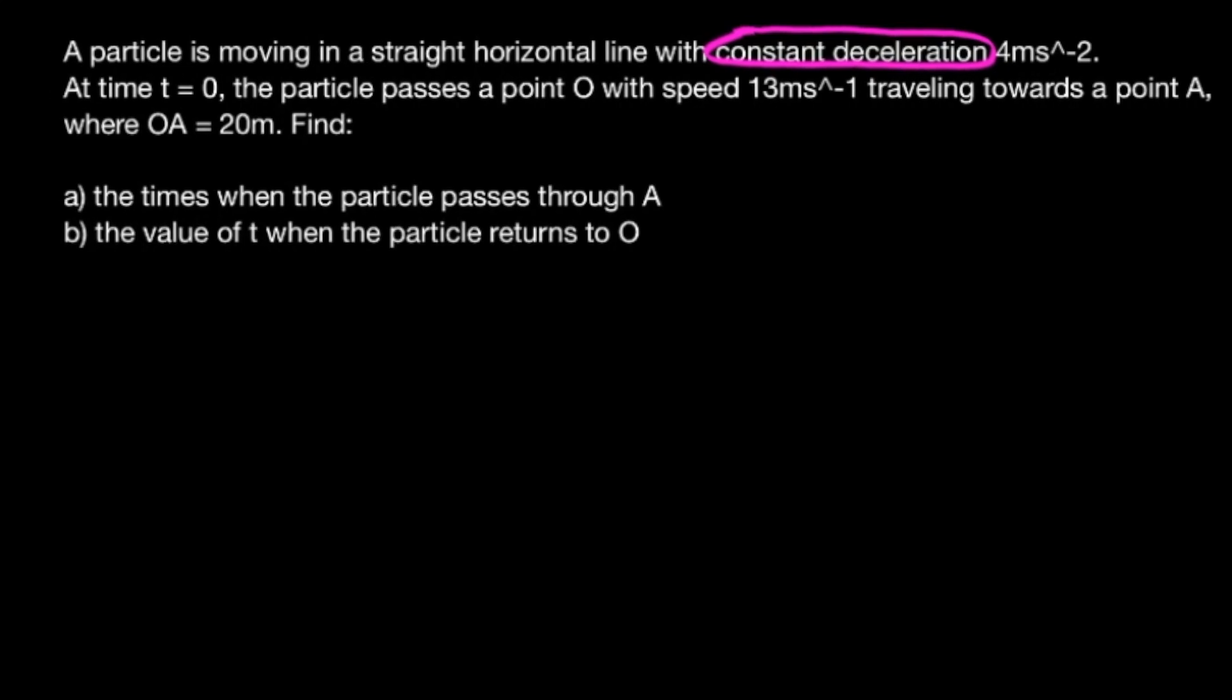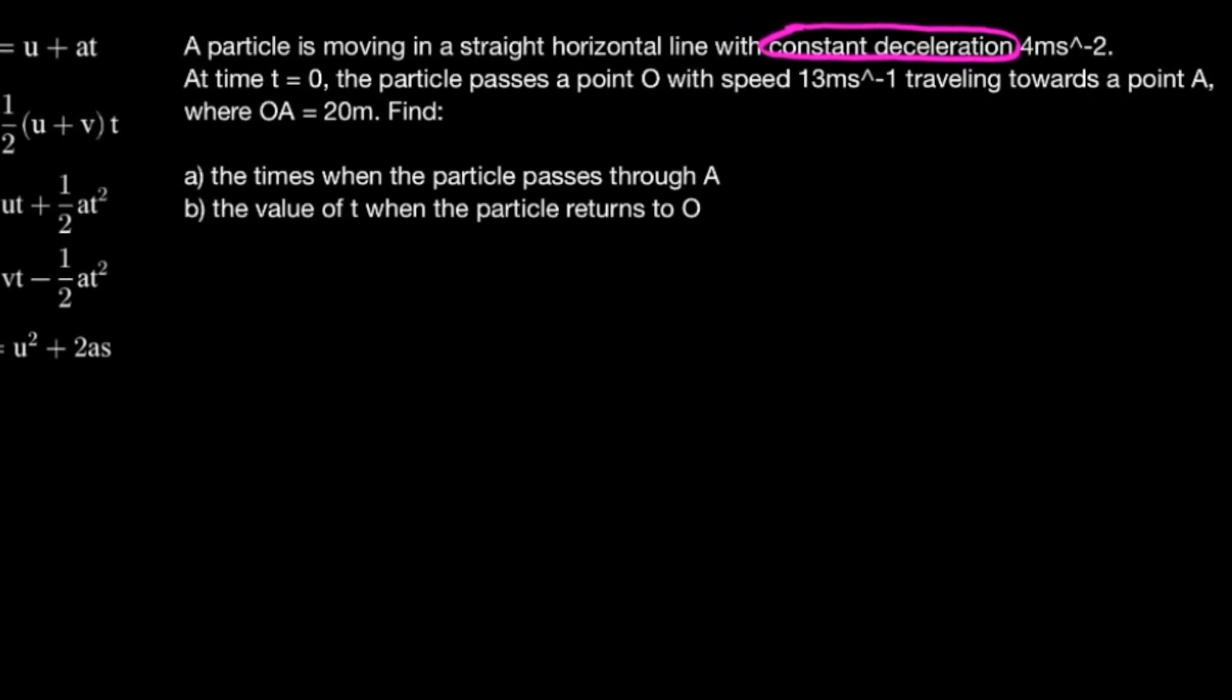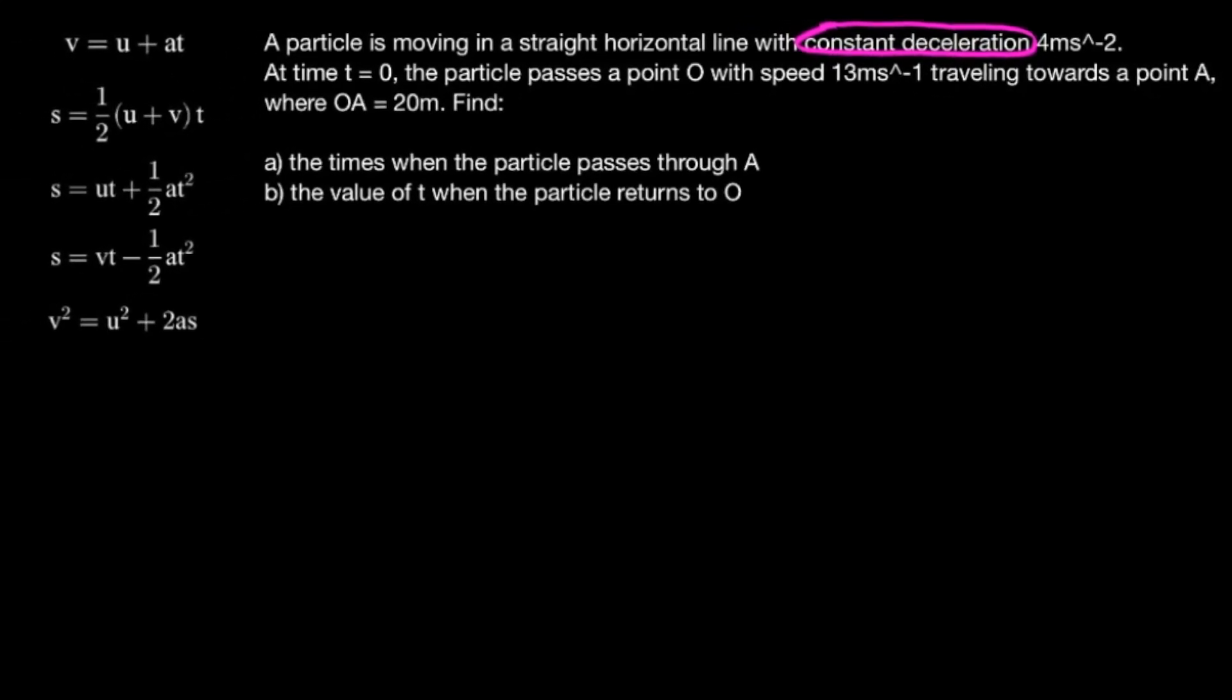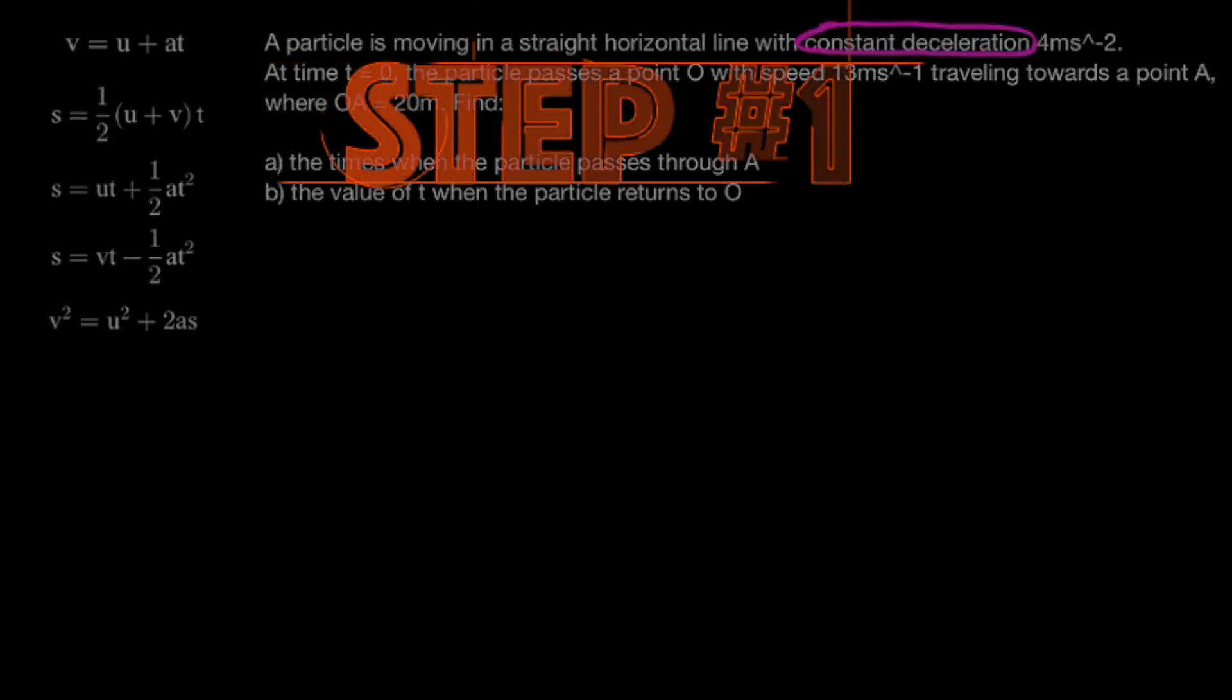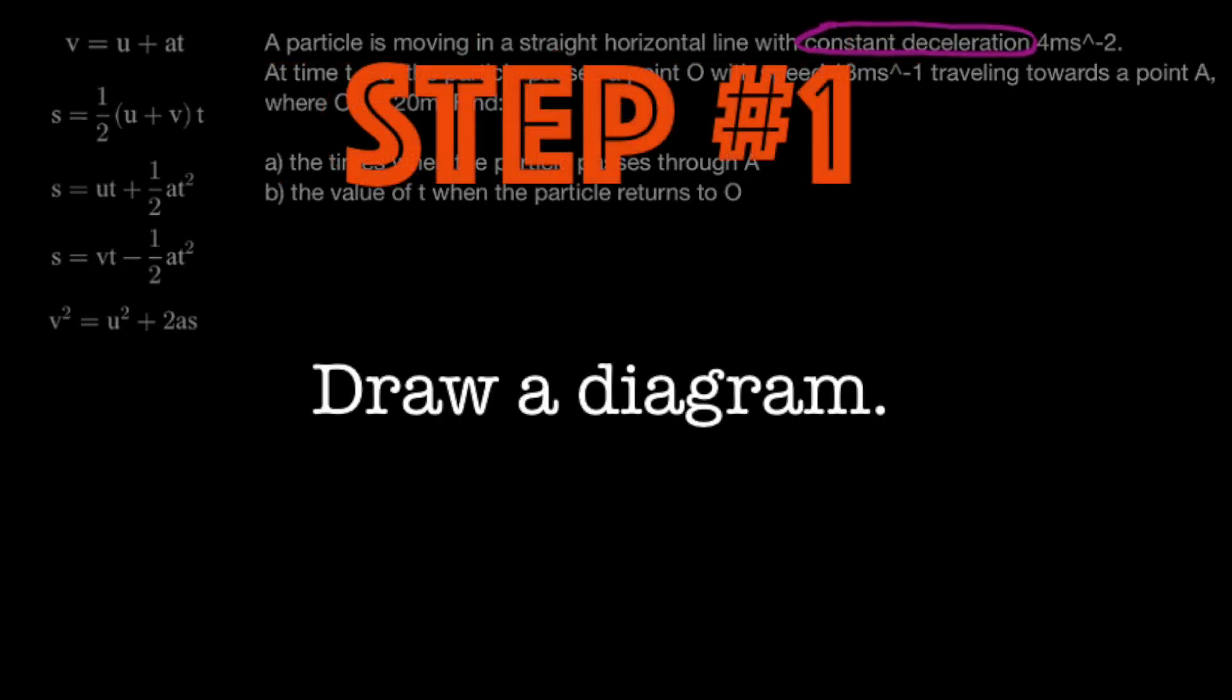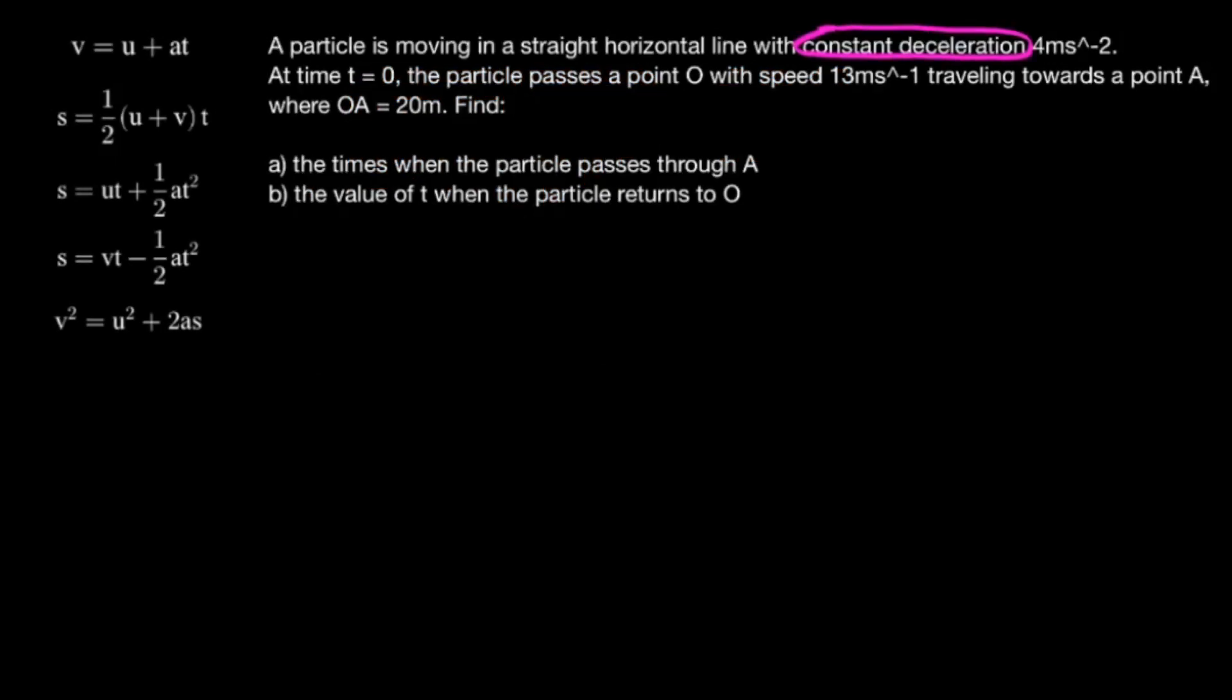Find the times when the particle passes through A. So this brings us to step 1, which is to draw a diagram. Obviously the diagram doesn't need to be artistic, it just needs to contain all the information that we're given in the question.